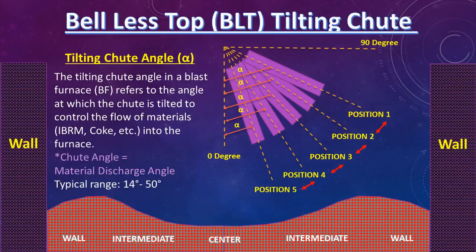In a Bell Less Top (BLT) charging system for blast furnaces, alpha, beta, and gamma angles refer to specific geometric parameters controlling material flow and distribution. Tilting shoot angle alpha has intermittent movement — it does not operate continuously, but is operated intermittently when an angle change is done in auto mode as per the operator's choice, or by the operator in manual mode.